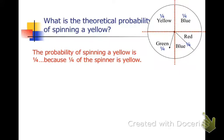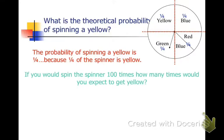So the theoretical probability is that we would land on yellow one out of four times. If you would spin the spinner 100 times, how many times would you expect to get yellow? Well, basically one-fourth of 100. We can change a fourth to a percentage, which is 25%, and 25% of 100 is 25.